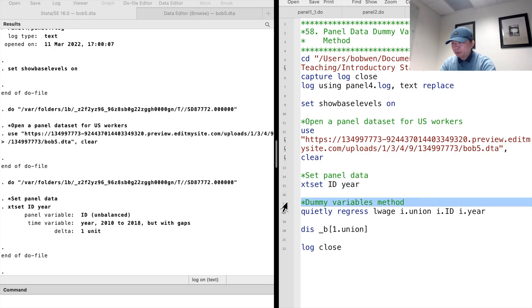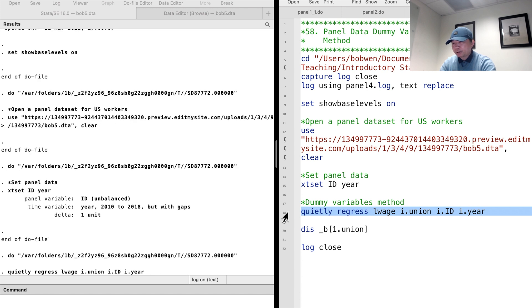In our sample, there were more than 4,000 workers. We can type quietly regress, followed by the outcome-variable log-wage, the explanatory-variable union, the individual-dummies, and the time-dummies. I add quietly before the regress command to avoid filling the screen with regression output. It takes quite a while to run the dummy-variable method model for estimating more than 4,000 coefficients.